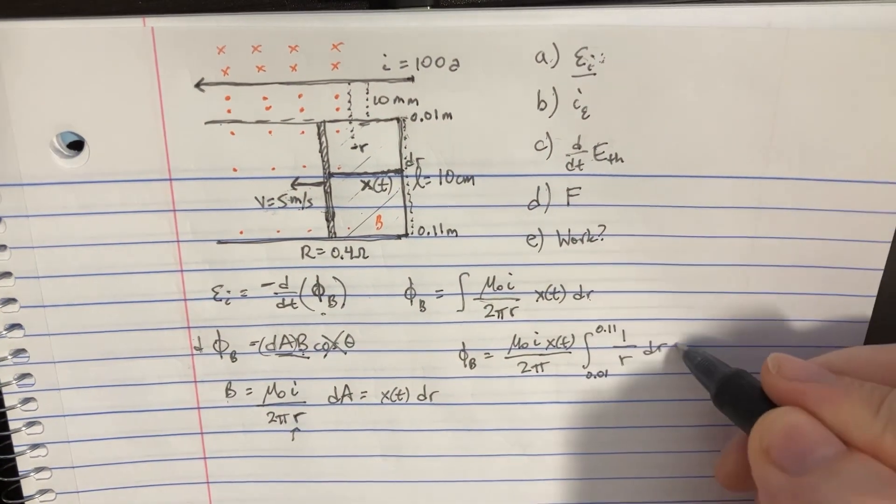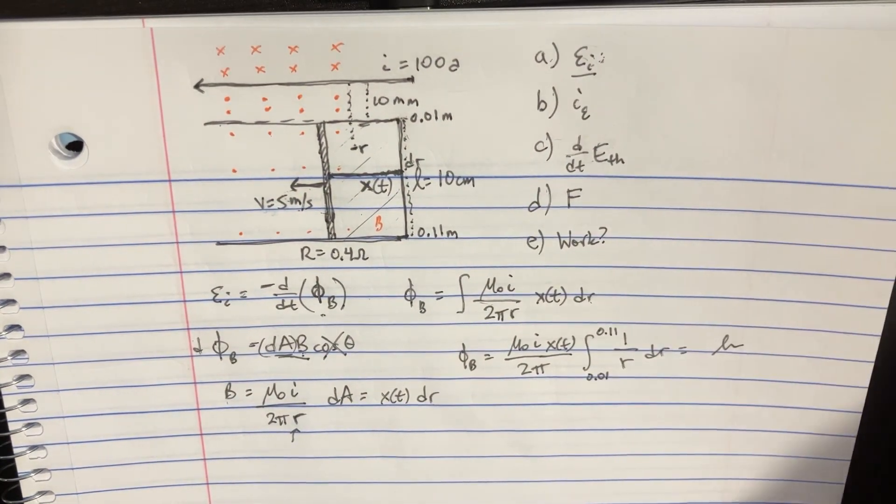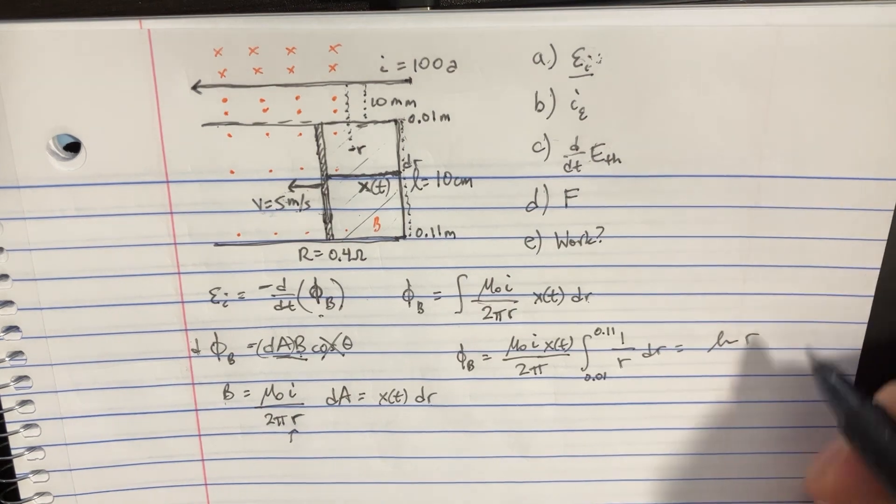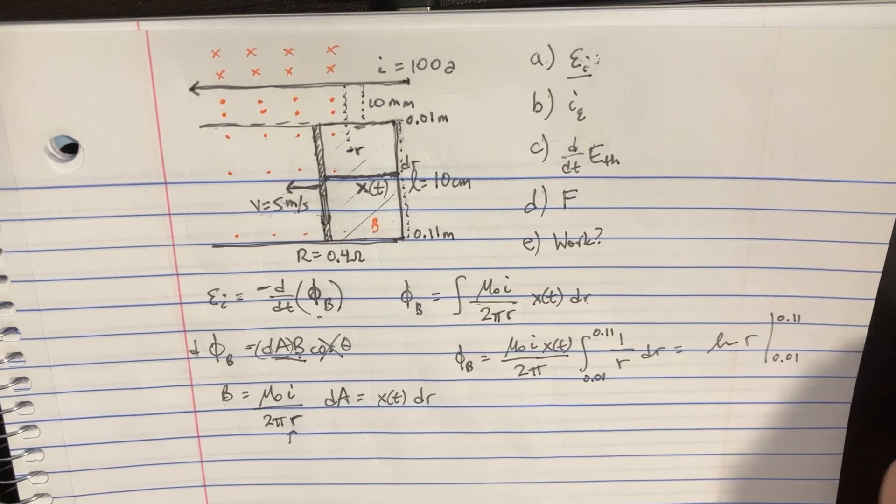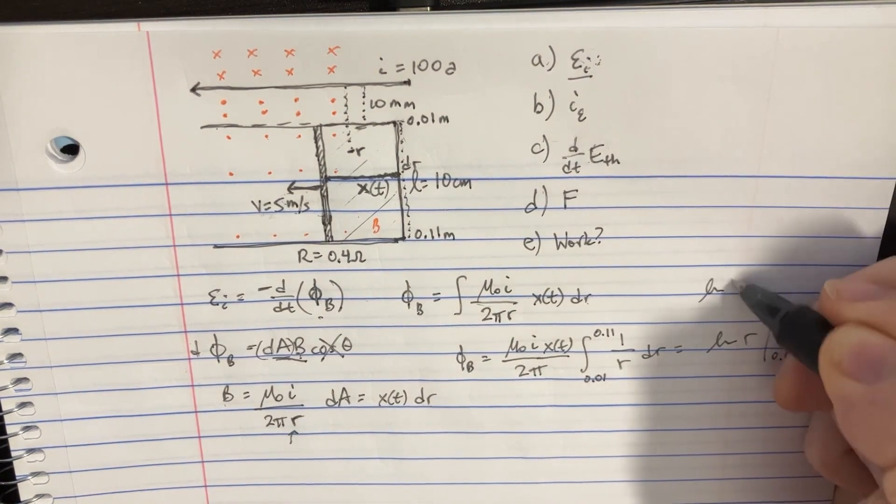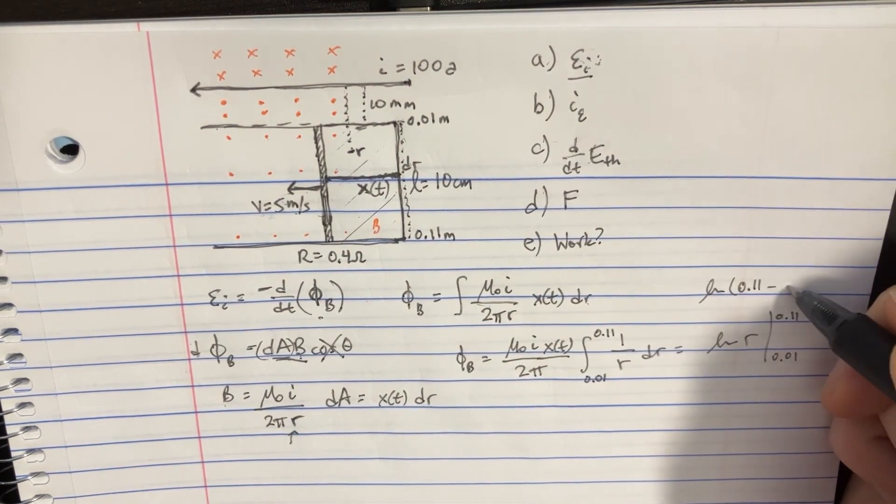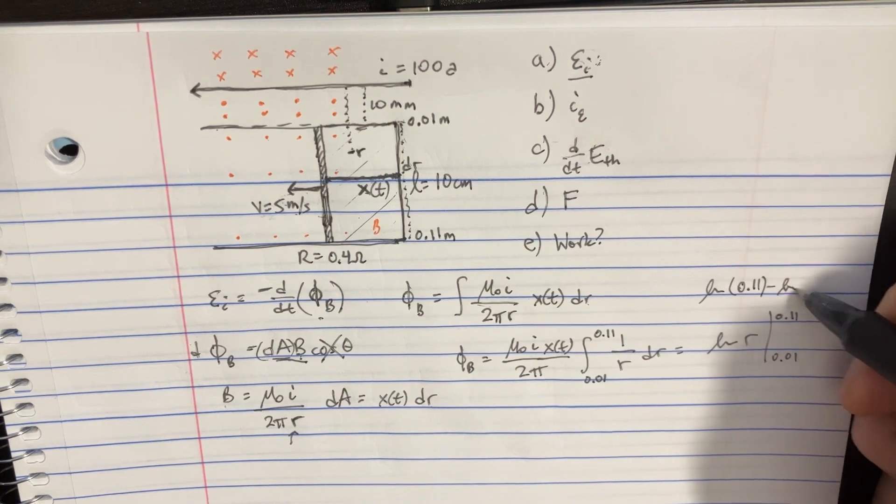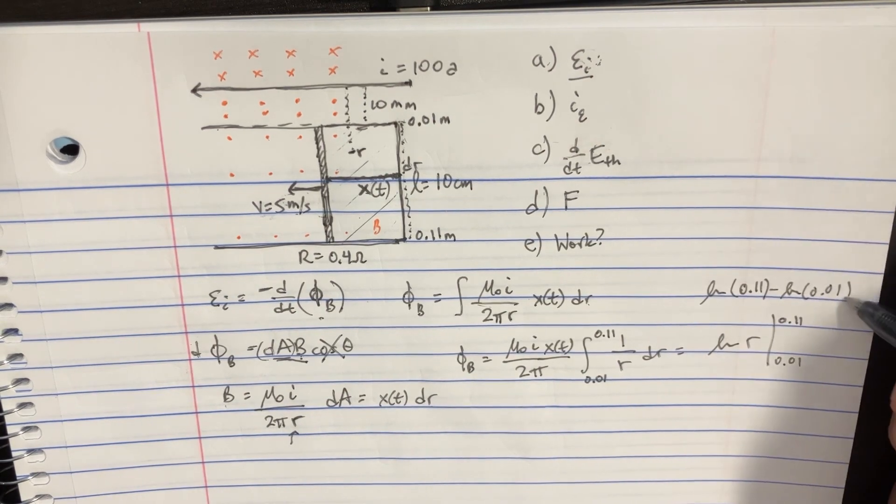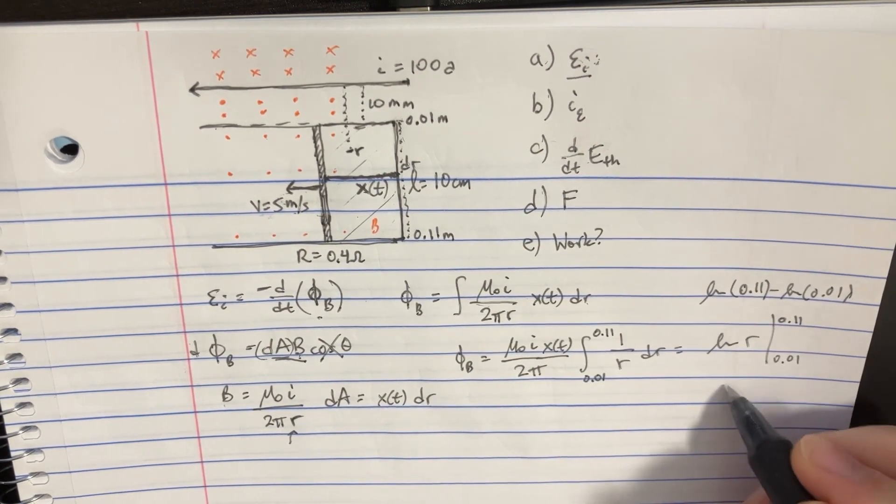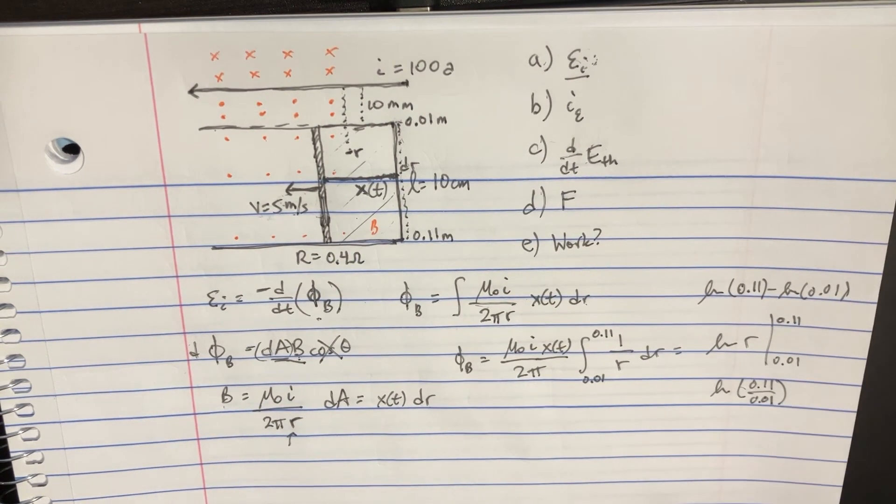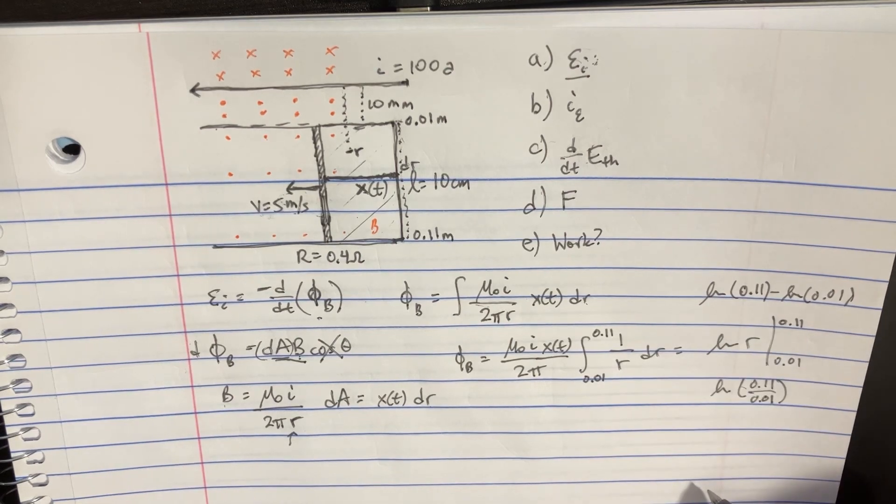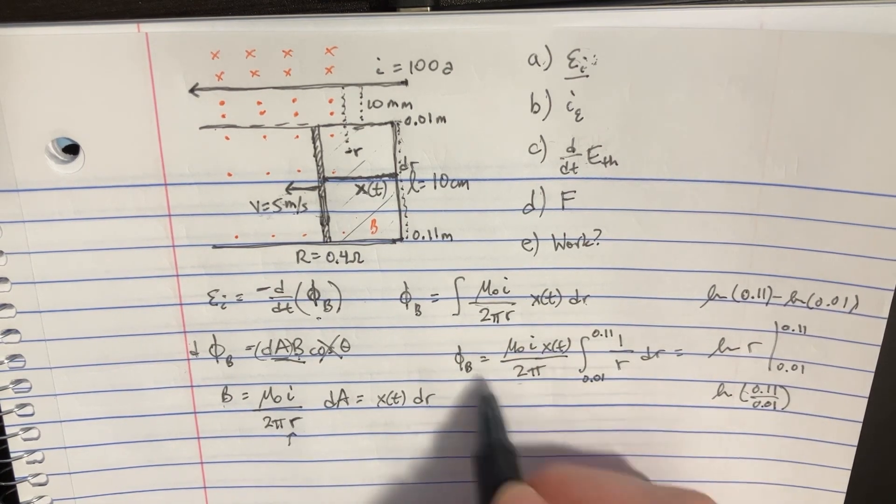That's a really easy integral. So the integral is just going to be ln of r going from 0.11 to 0.01. This is essentially equal to ln of 0.11 minus the ln of 0.01. And we could put those together, so you'd essentially get ln of 0.11 divided by 0.01, being the answer to that integral. So that's that. And then you're going to multiply that by this.